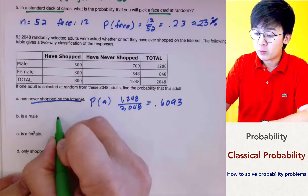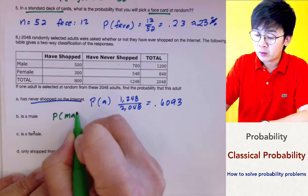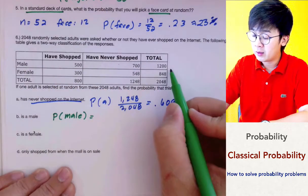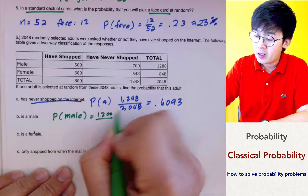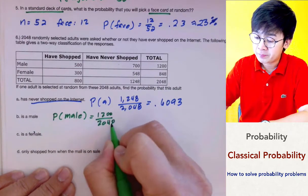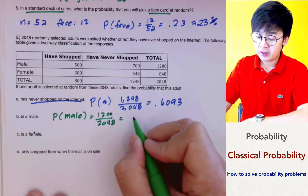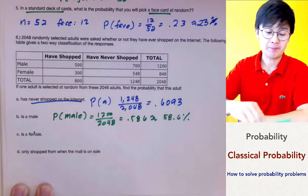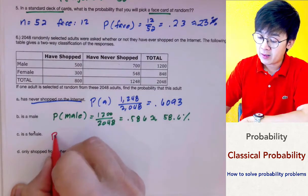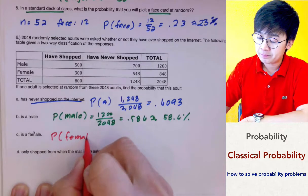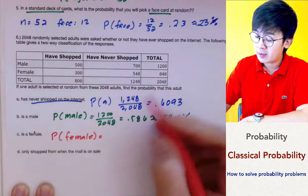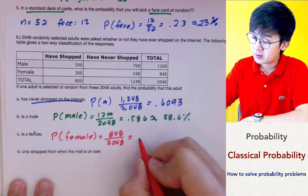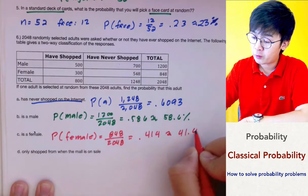For the second question, the probability that we are selecting a male from this surveyed group: the total number of male participants is 1,200 out of 2,048, which gives us 0.586 or 58.6%. For the third problem, the probability that the person selected is female: the female participants total 848 out of 2,048, giving us 0.414 or 41.4%.